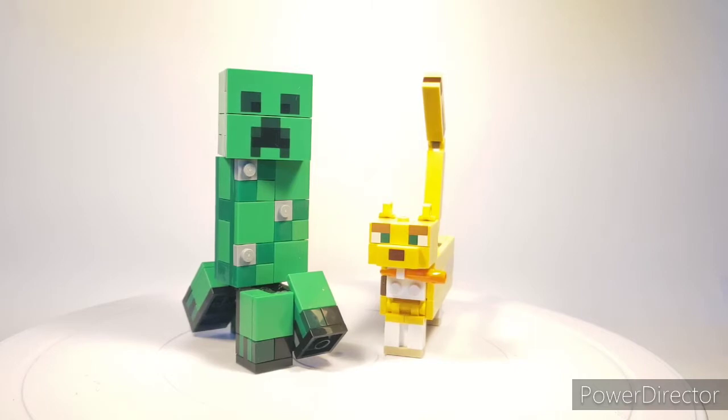Minecraft Big Fig Creeper and Ocelot, ages 7 and up, set 21156, 184 pieces, and retails around 15 to 20 dollars in the US. It's a very interesting set, but we're gonna give you guys a quick look at the creeper first.